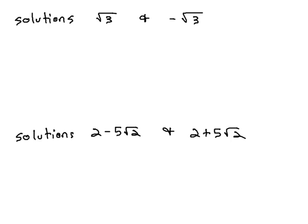In this video, we're going to look at how we can take the solutions to a quadratic and use those to find the quadratic that generated them. In this case, we're going to have irrational solutions, such as in this first example, the square root of 3 and negative square root of 3.